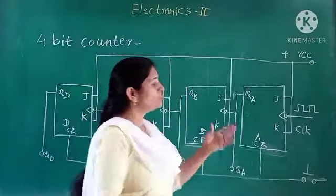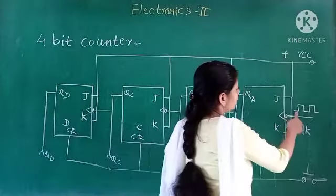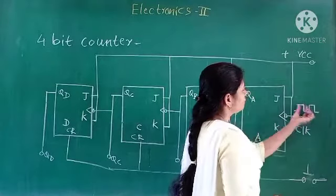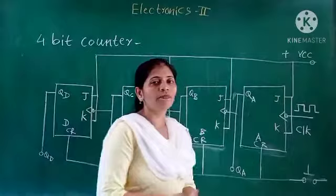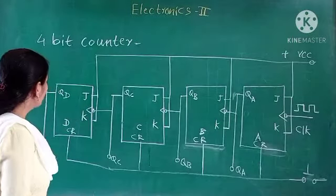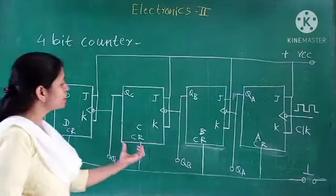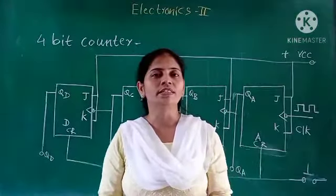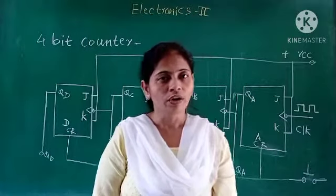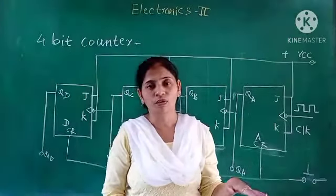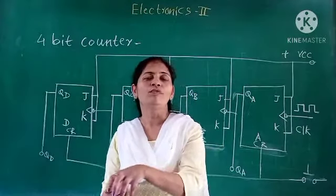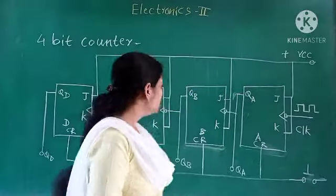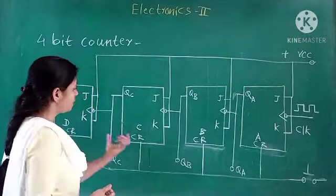For every negative edge, we are getting the output. Now, as you can see in the diagram, we are using one facility known as the clear facility. Clear facility means it will clear all the flip-flops, meaning we can set all the flip-flops to 0, 0, 0, 0. We are using the clear facility, labeled CR.